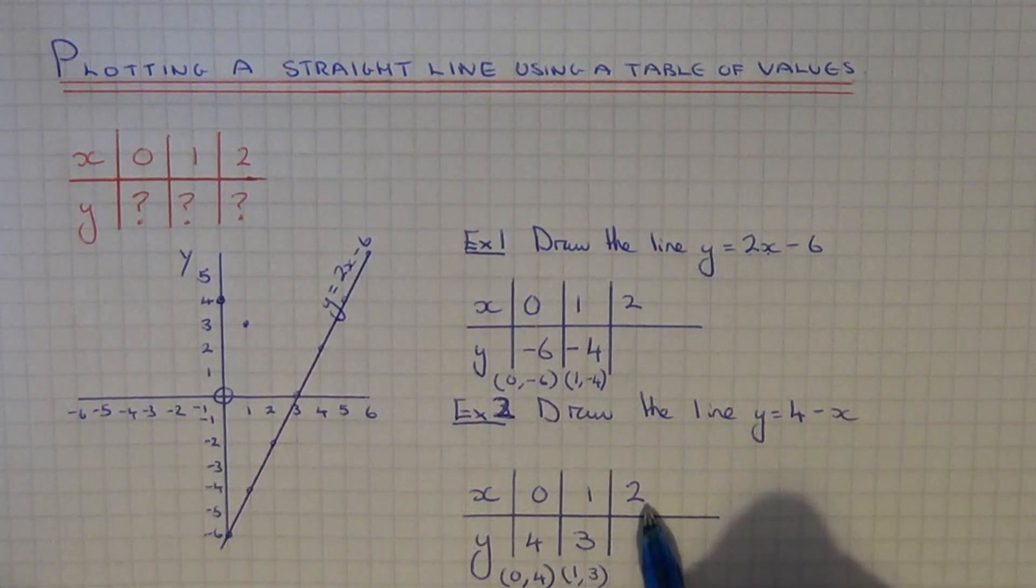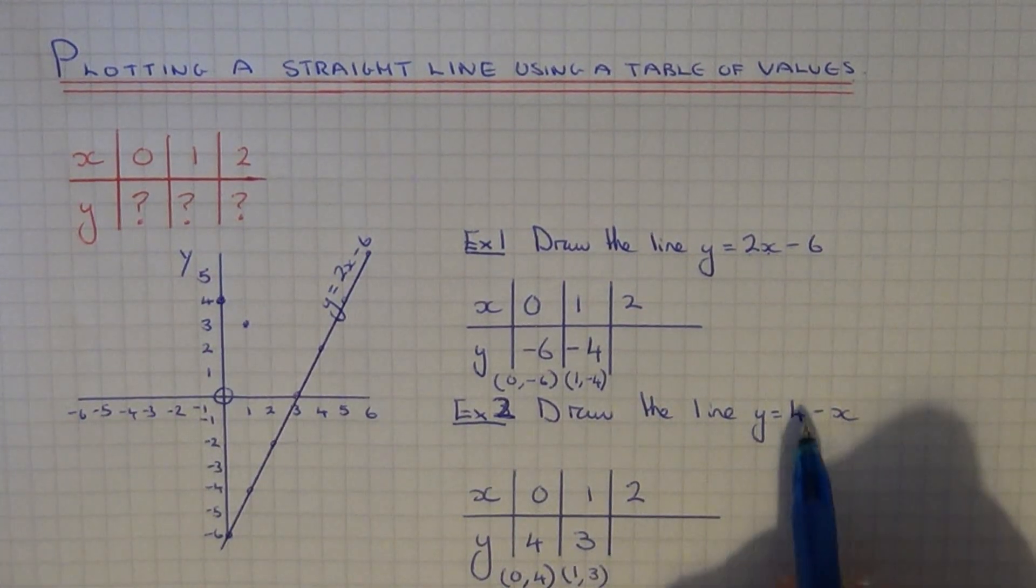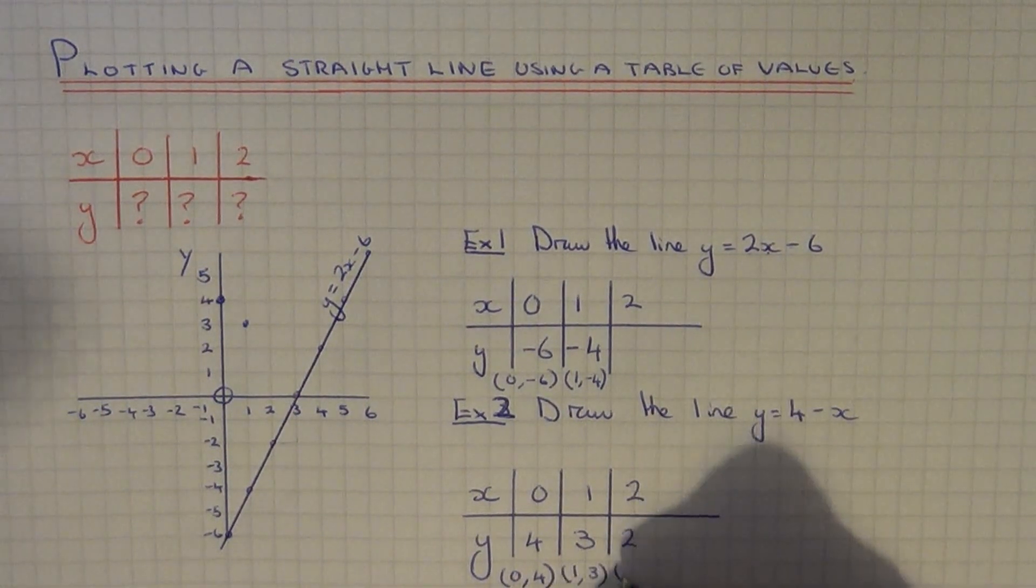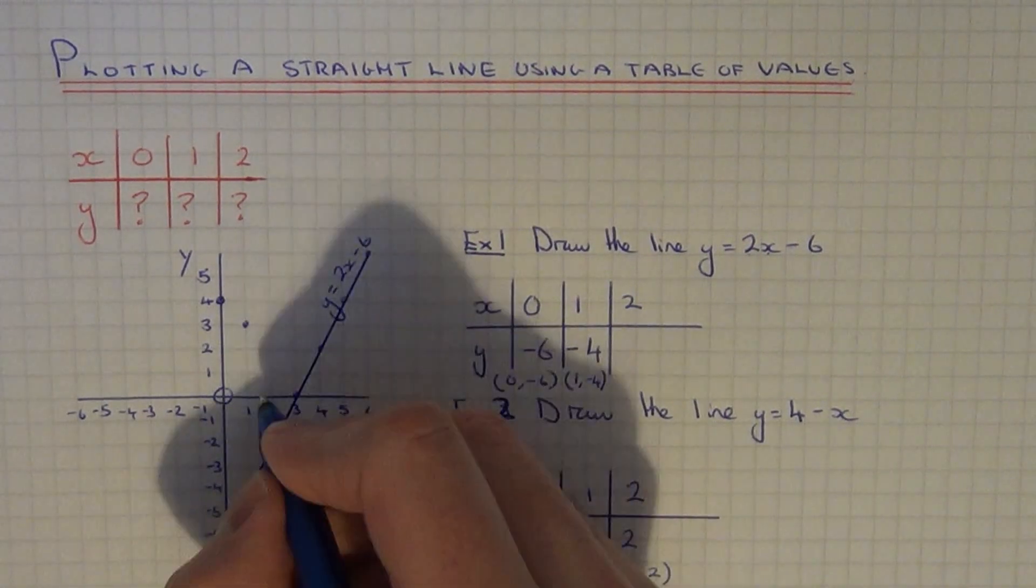And finally, let's put x equals 2. So 4 take away 2 is 2. So our final coordinate point is 2, 2.